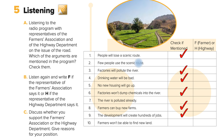Let's check the answers. People will lose scenic route — F (farmers association). Factories will pollute the river — F. Drinking water will be bad — F. Factories won't dump chemicals into the river — H. Farmers can buy new farms — H.